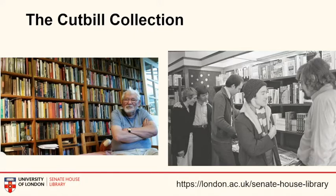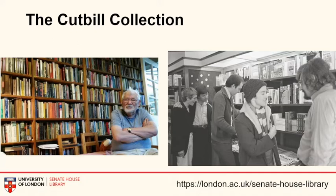I love this idea of a parallel collection being built up next to the collection of a bookshop — one that accretes and grows rather than being depleted. Jonathan Cutbill also founded a support group called Gay Icebreakers, which met at the shop, and was key in gaining public acceptance of Wilfred Owen as a gay poet. He wrote an essay in the New Statesman in 1987 called 'The Truth Untold', making the case for Owen's homosexuality based on his own interpretation of the poems.